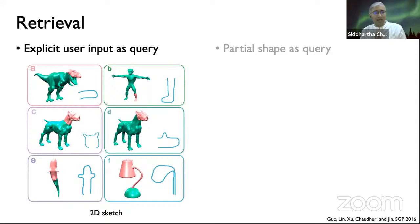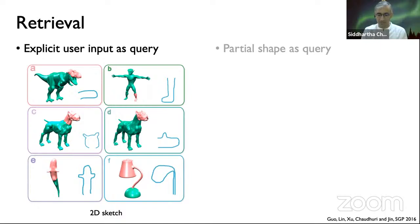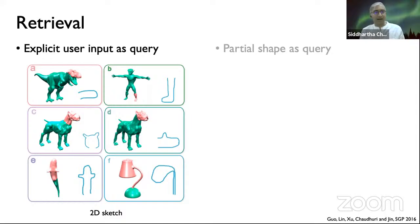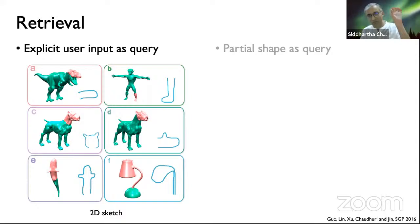Some work we did much later in 2016 suggests another way to search for proxies is to sketch it. You don't even need a partial shape — you can just sketch a silhouette, and we have machinery that trawls the database and looks for parts of shapes. These shapes need not be pre-segmented; it does a virtual segmentation in real time, pulling out parts that satisfy those silhouettes so you can use them in the shape you're constructing. So now we have 2D sketches as queries for part retrieval.